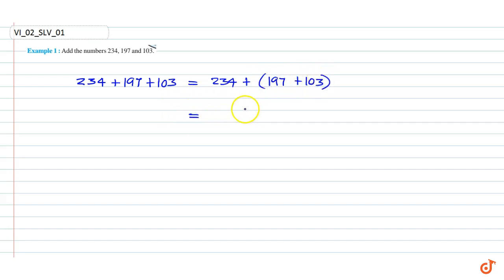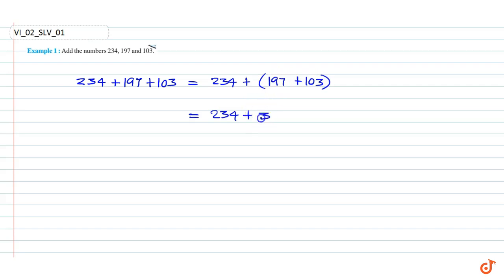We group the numbers for convenience of adding. So we get 234, and 197 plus 103 is 97 plus 300 plus 100 plus 100, which is 300. This is equal to 534. That is our answer.